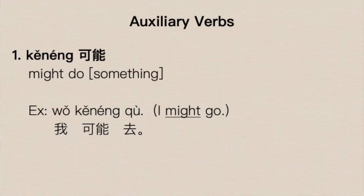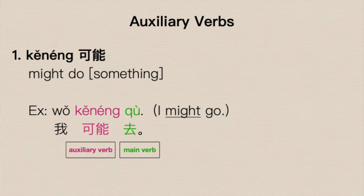The first one is 可能 (kěnéng), which means 'might' or 'possibly able to.' Like 我可能去 — 'I might go,' 'I'll possibly go.' This is far from definitive; I wouldn't stake your plans on a guy who says 我可能去. He might go, he might not. 可能 is our auxiliary verb — it comes before the main verb of the clause, which is 去 (to go).